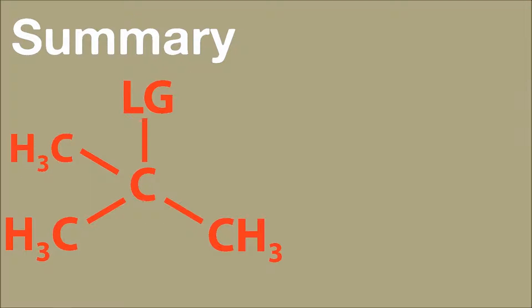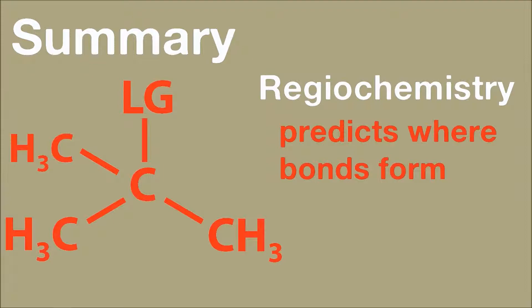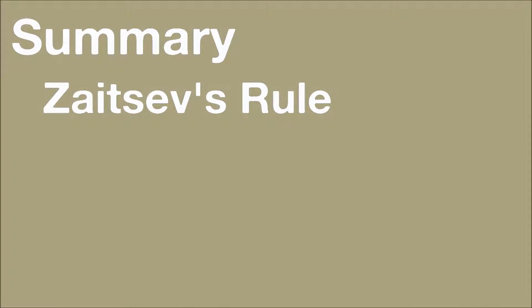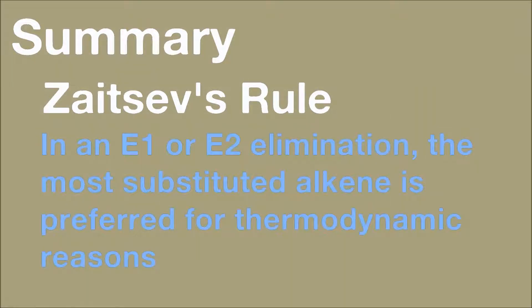Eliminations remove a leaving group from an alpha position and a proton from a beta position. The regiochemistry of a reaction describes the likelihoods of each beta position to be deprotonated by a base. Zaitsev's rule observes that in E1 and E2 eliminations, the most substituted alkene is preferred for thermodynamic reasons.